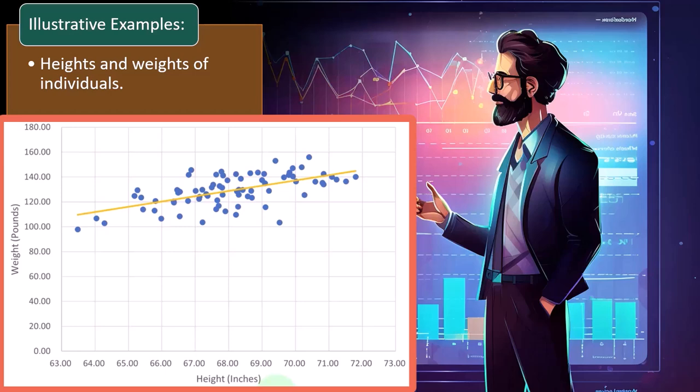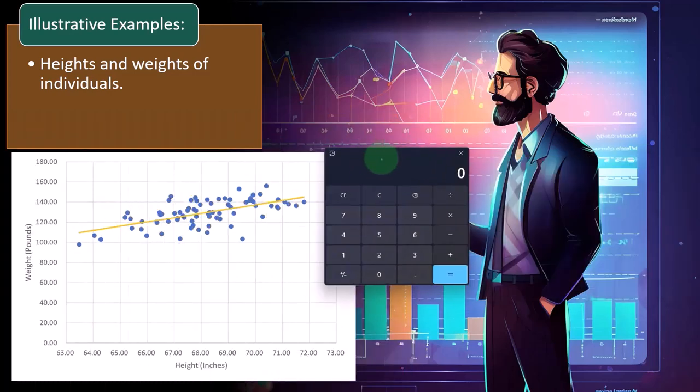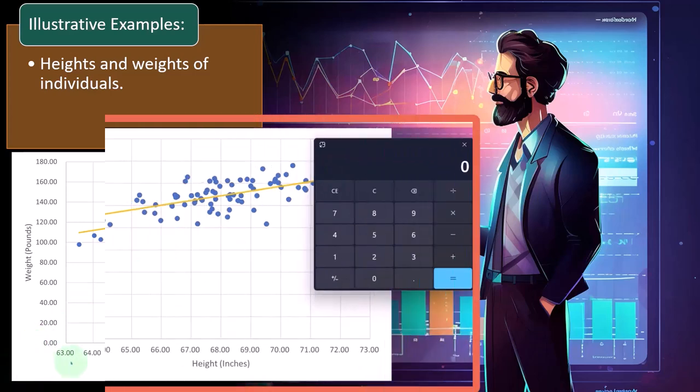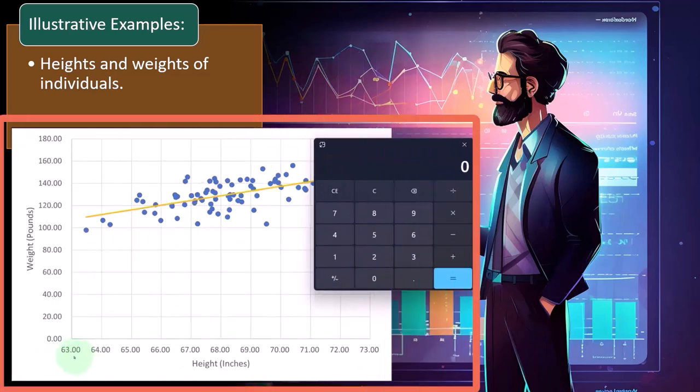But that's not always the case, right? We could have somebody that's like, if this is measured in inches, so 63 inches, 63 divided by 12 would be 5.25 feet, and they could be like 200 pounds or 180 pounds.